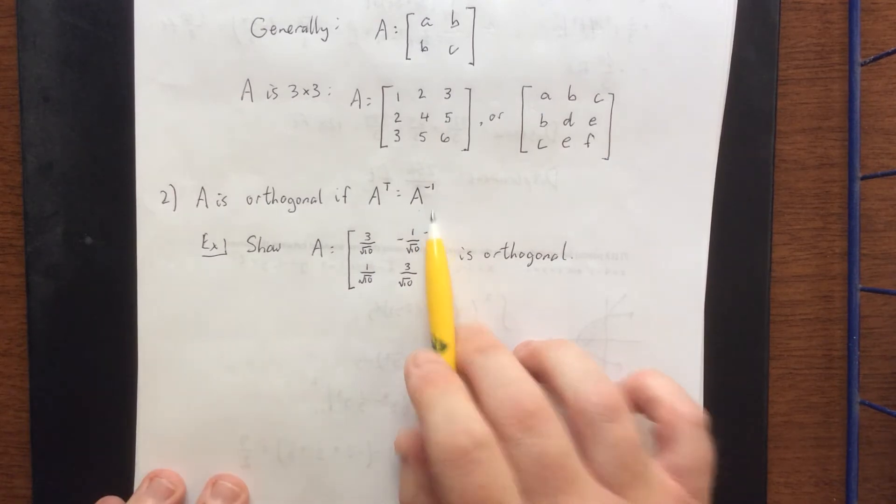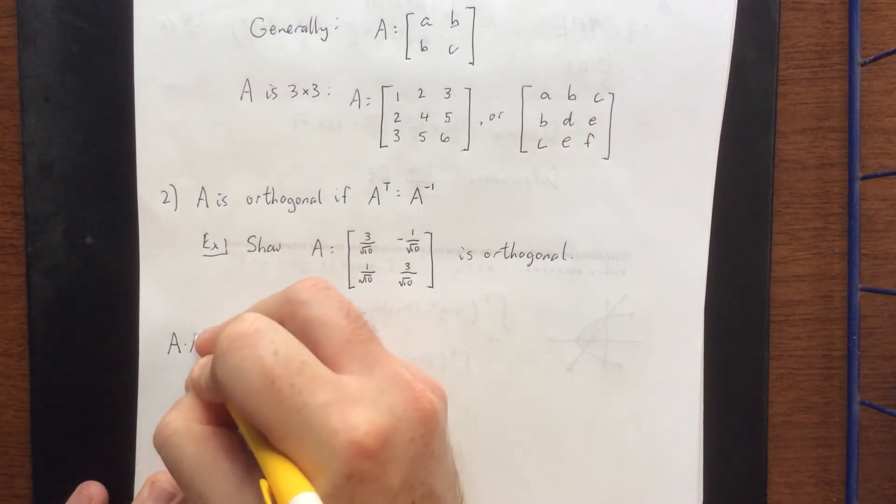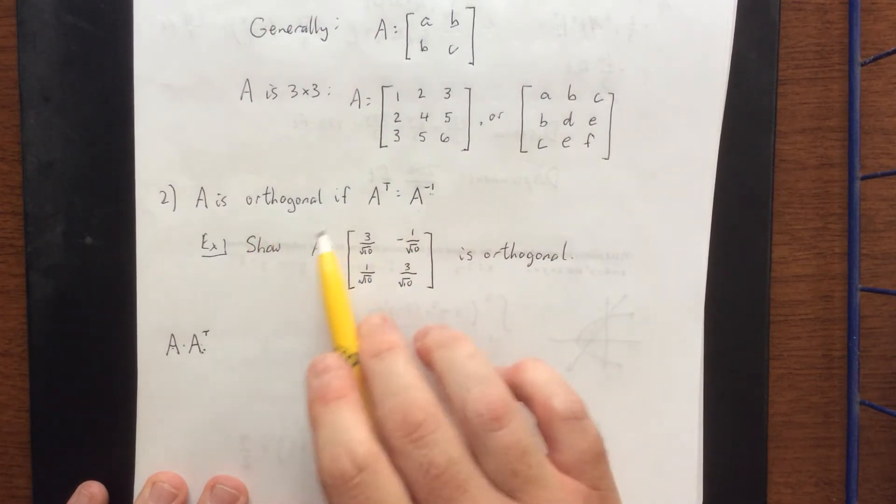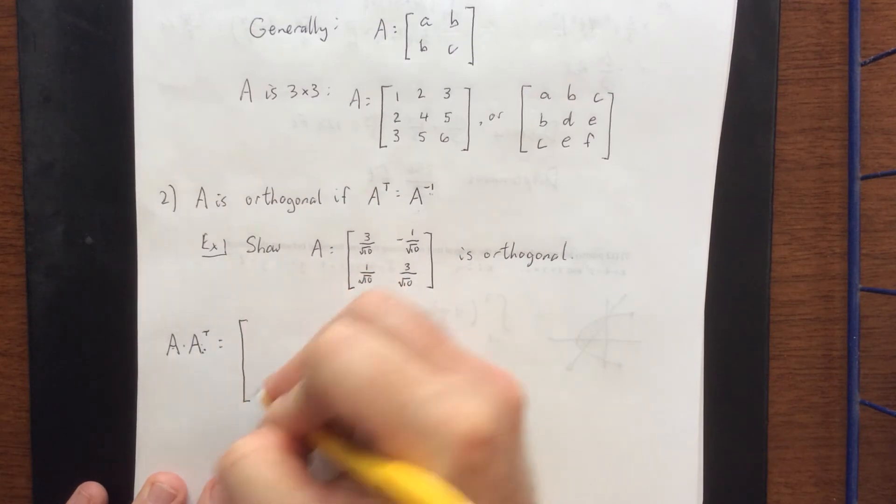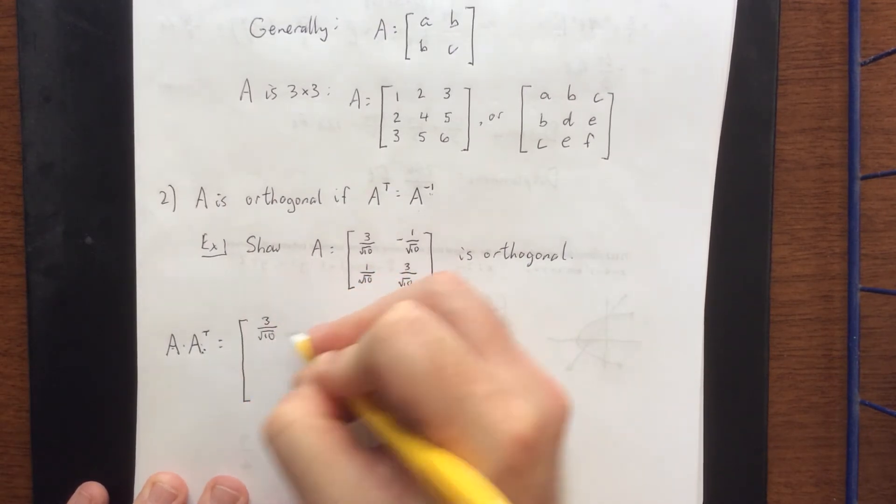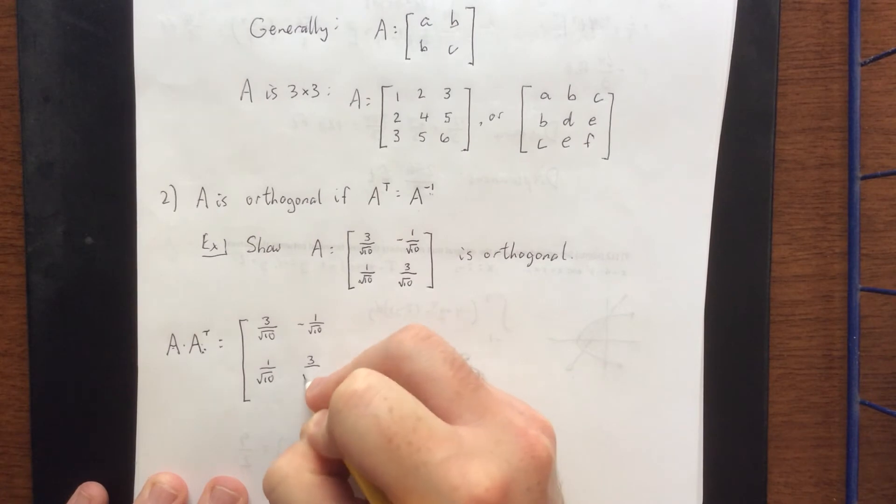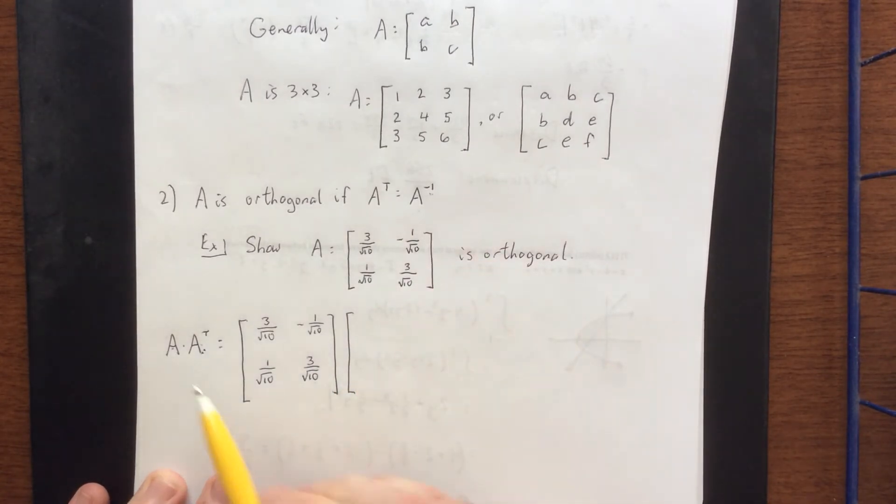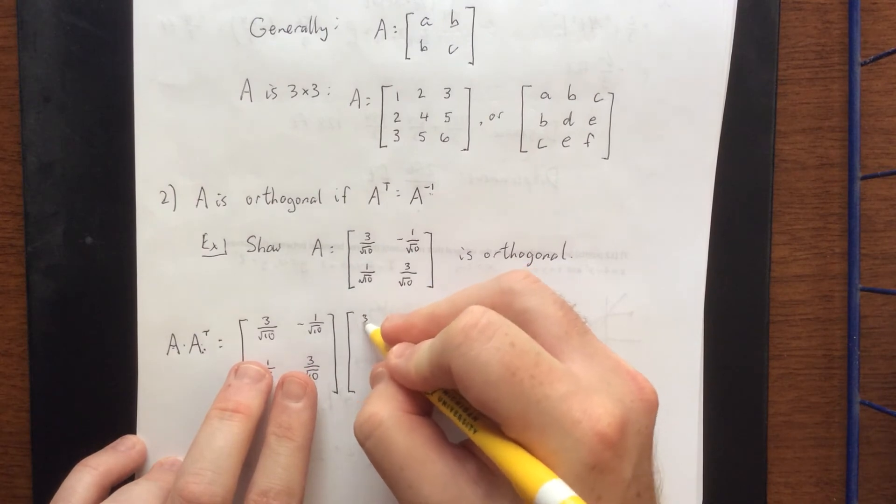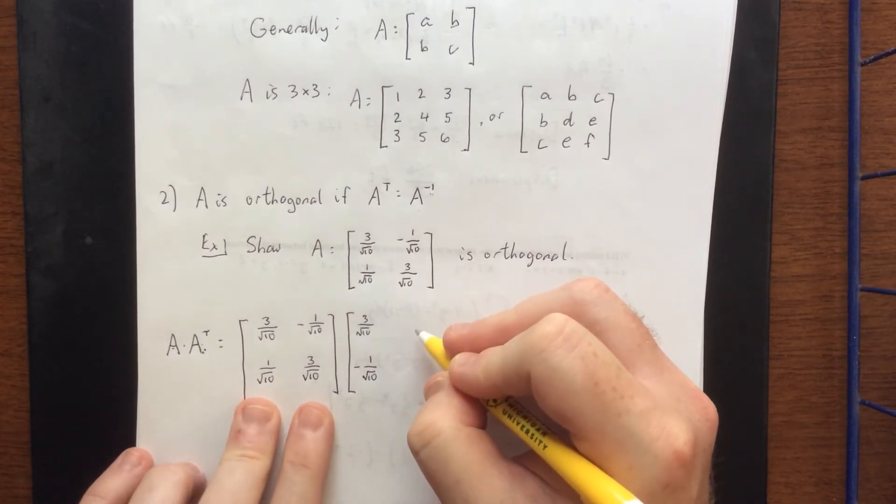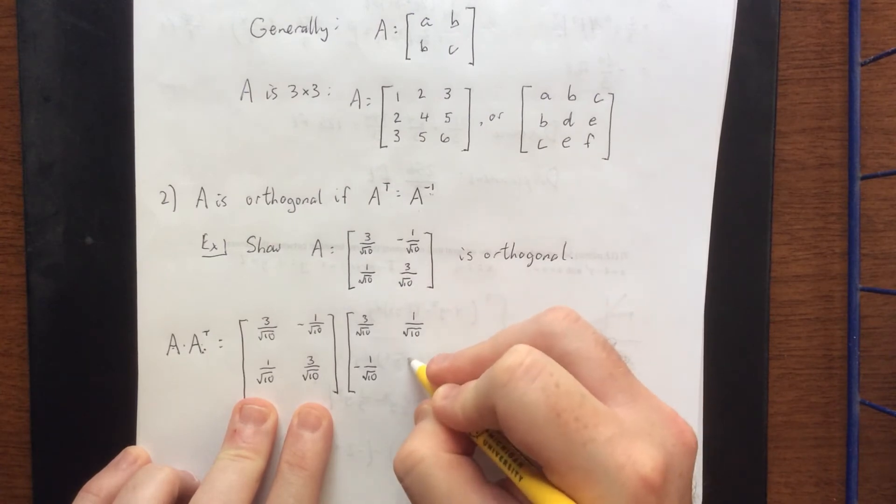Now the way that we can verify that a matrix is orthogonal is the same way that we would verify that a matrix is an inverse of something else. If I multiply the original matrix by its inverse, then I should wind up with the identity matrix. So what I'm going to do is half of the process. I am going to multiply A times A transpose. Now if I multiply A by A transpose and I get the identity matrix, that lets us know that the transpose is the inverse. Therefore, A would be orthogonal. So with that in mind, we'll recopy down what A is equal to: 3 over the square root of 10, negative 1 over the square root of 10, positive 1 over the square root of 10, and 3 over the square root of 10. The transpose of A would be what I get by replacing the rows with columns. So the first row of A is going to become the first column of A transpose. Then the second row of A is going to become the second column of A transpose.